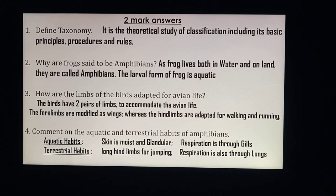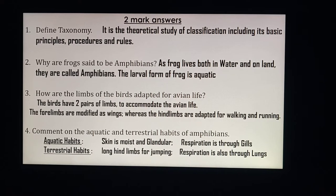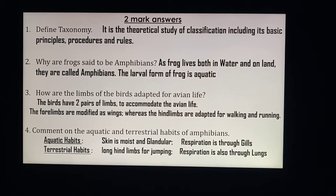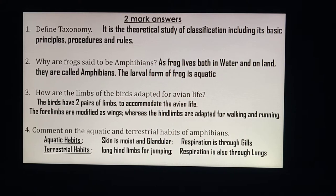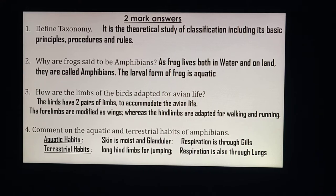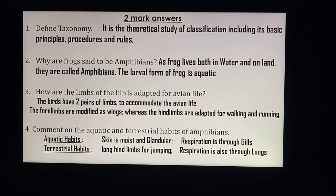Third question: how are the limbs of birds adapted for avian life — that is, for flying? Birds have two pairs of limbs. The forelimbs, found at the front, are modified as wings.